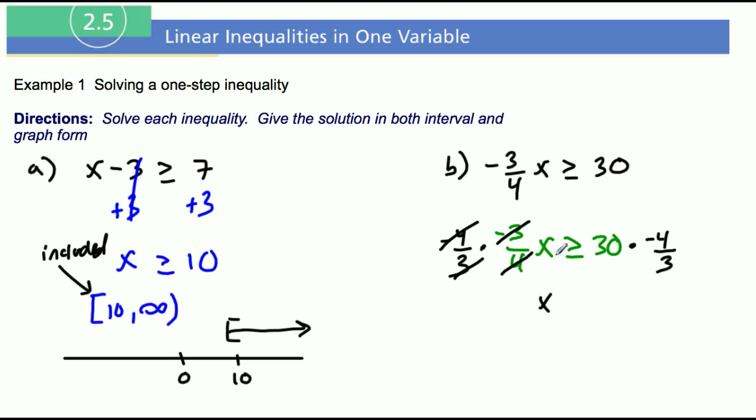One important rule that's so easy to forget and gets incorrect answers: we need to flip the inequality any time you multiply or divide by a negative number. We just multiplied by negative four-thirds. If you multiply or divide by a negative number, you flip the inequality. This is going to go from a greater than to a less than or equal to.